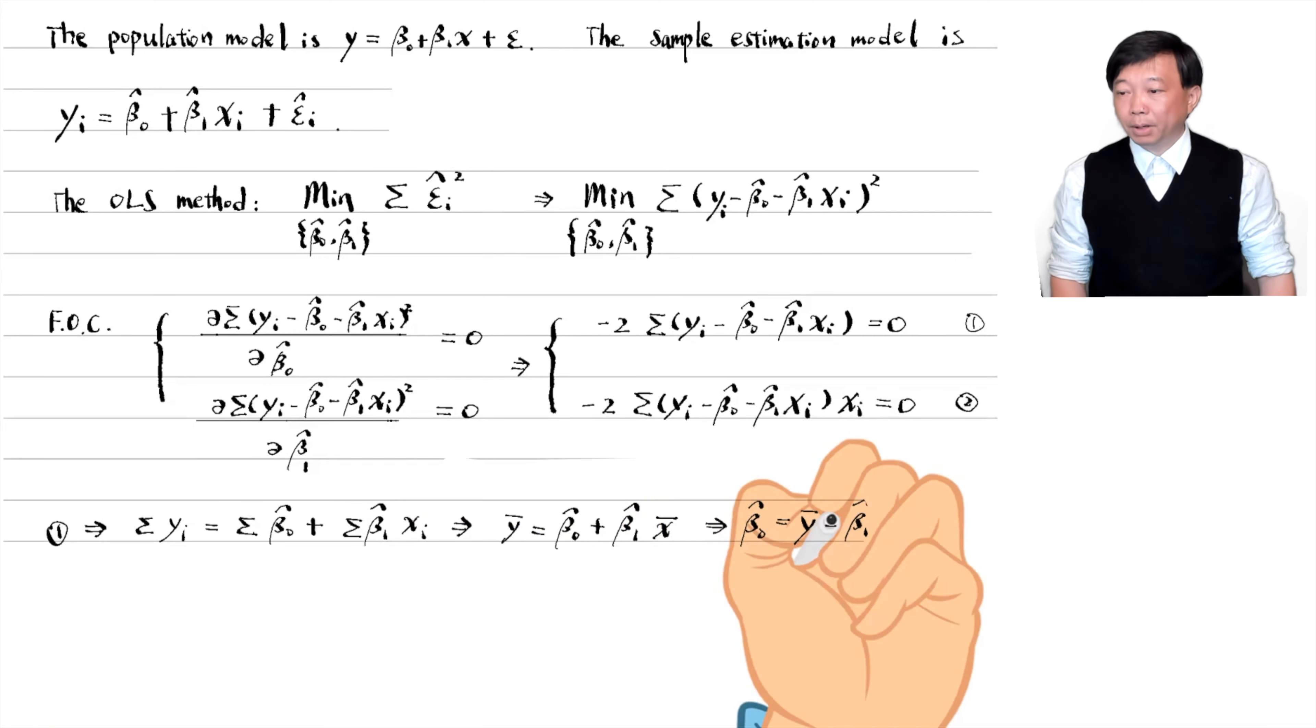The first normal equation implies that the fitted line goes through the point of sample means. Combining it with the second normal equation results in equation 4.